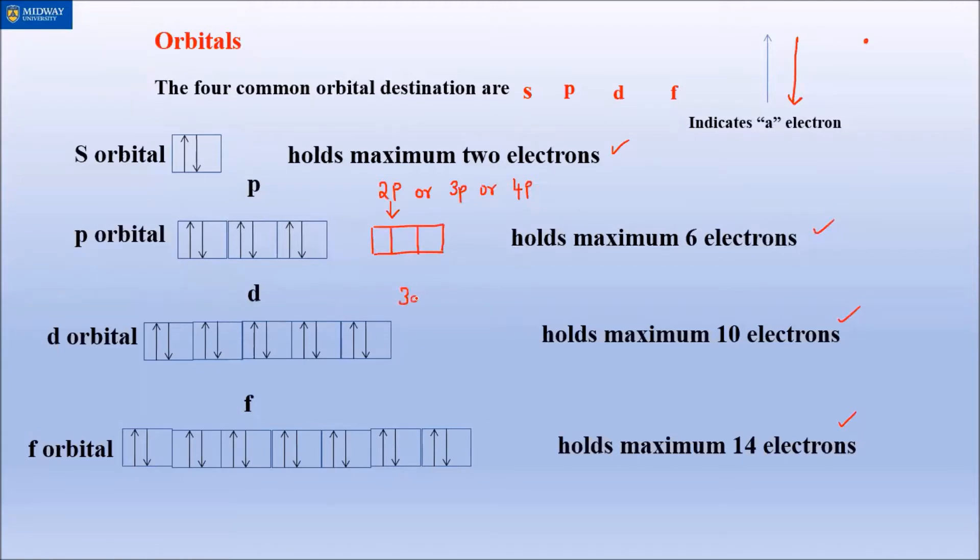Similarly, whether you're dealing with 3D or 4D, every D is five boxes - one, two, three, four, and five. Each cell within that can hold two, that's how we account for the ten. If you're starting to discuss 4F or 5F, seven boxes. Each contains a maximum of two per cell, that's seven times two equals 14 total.